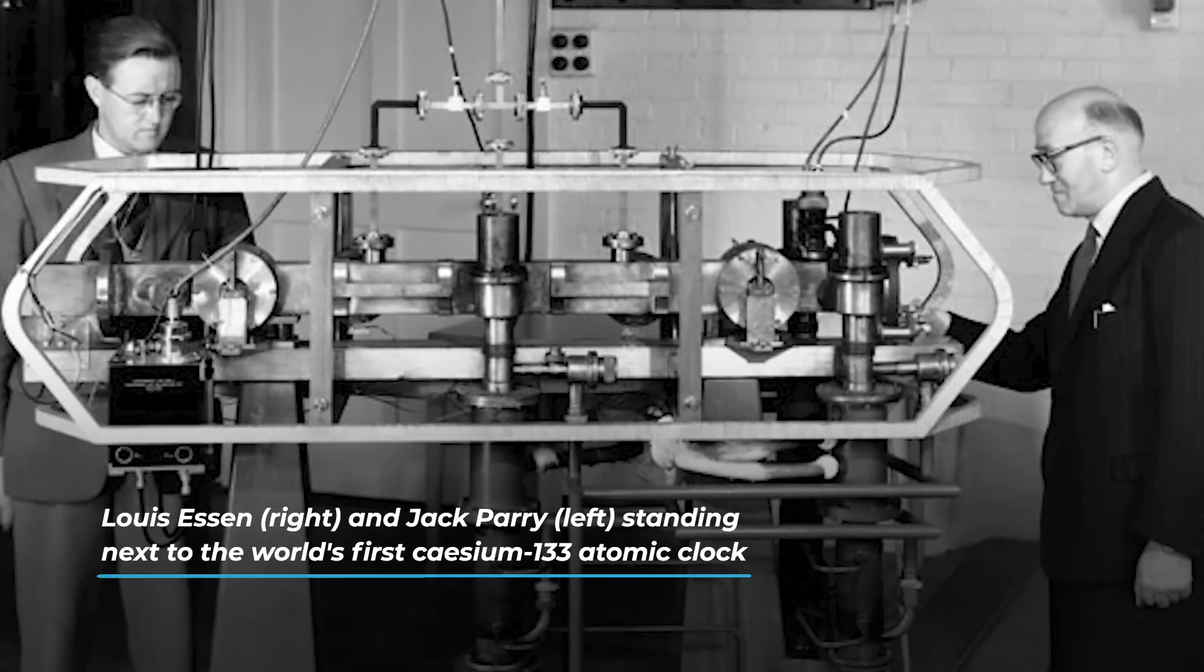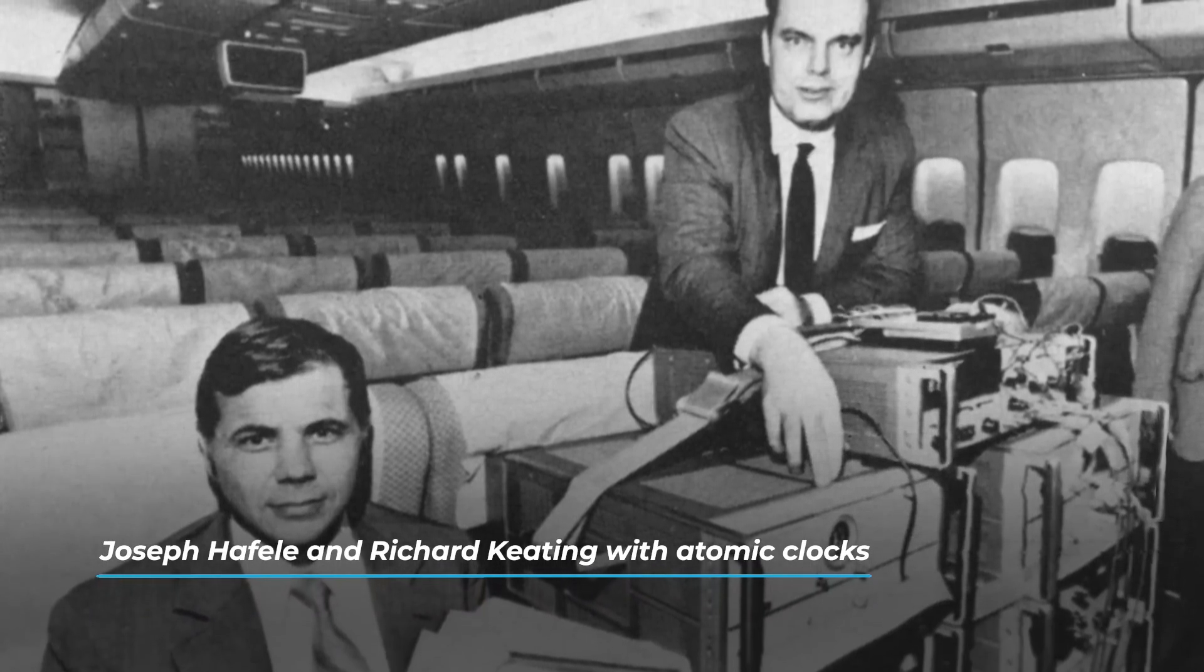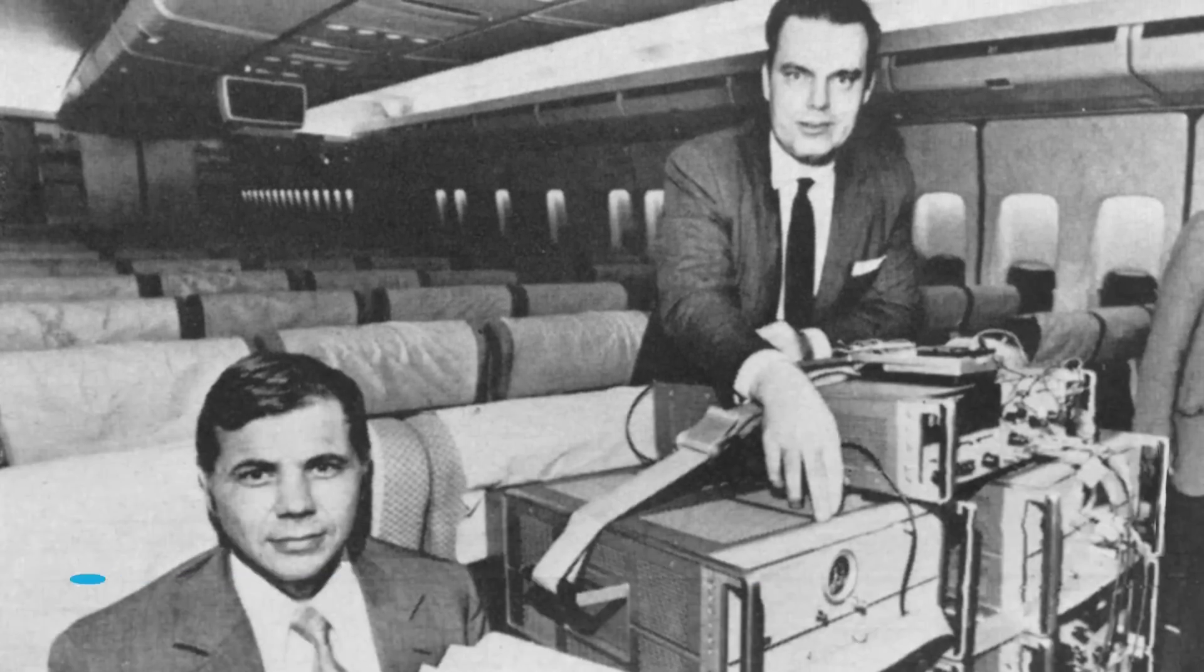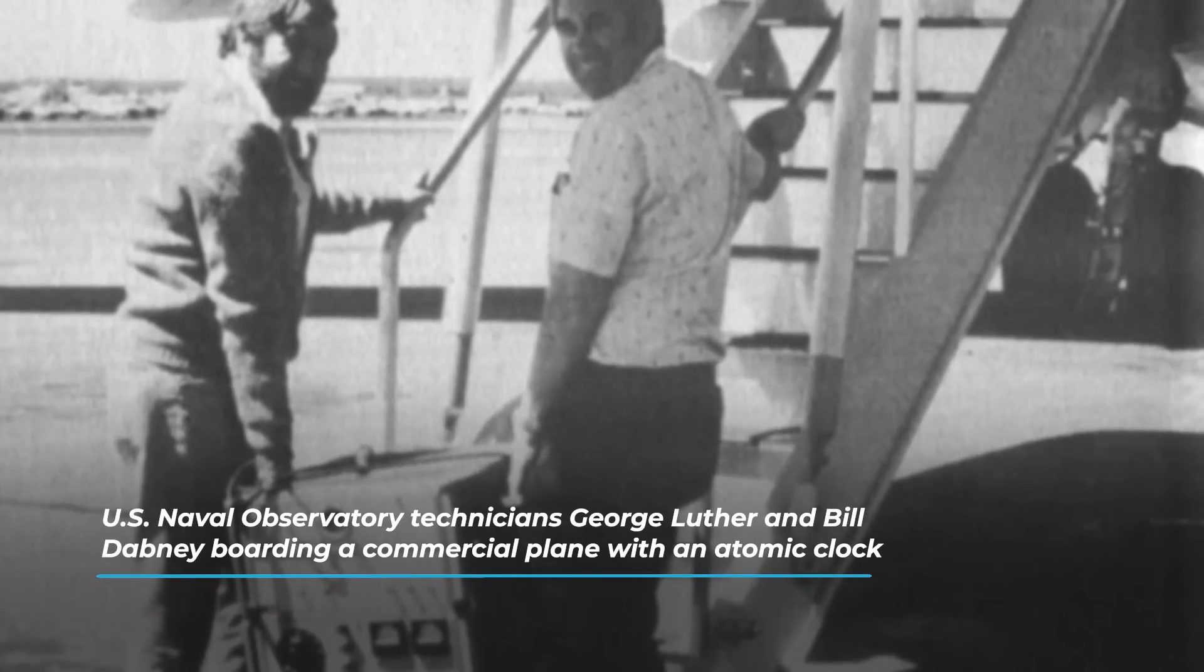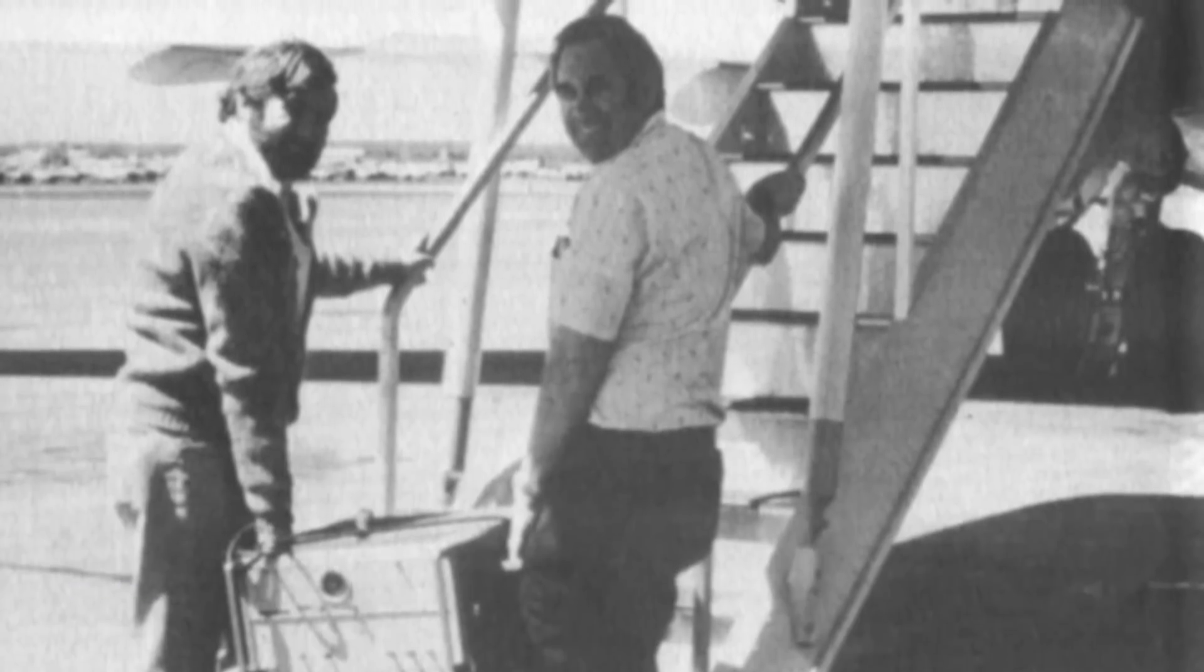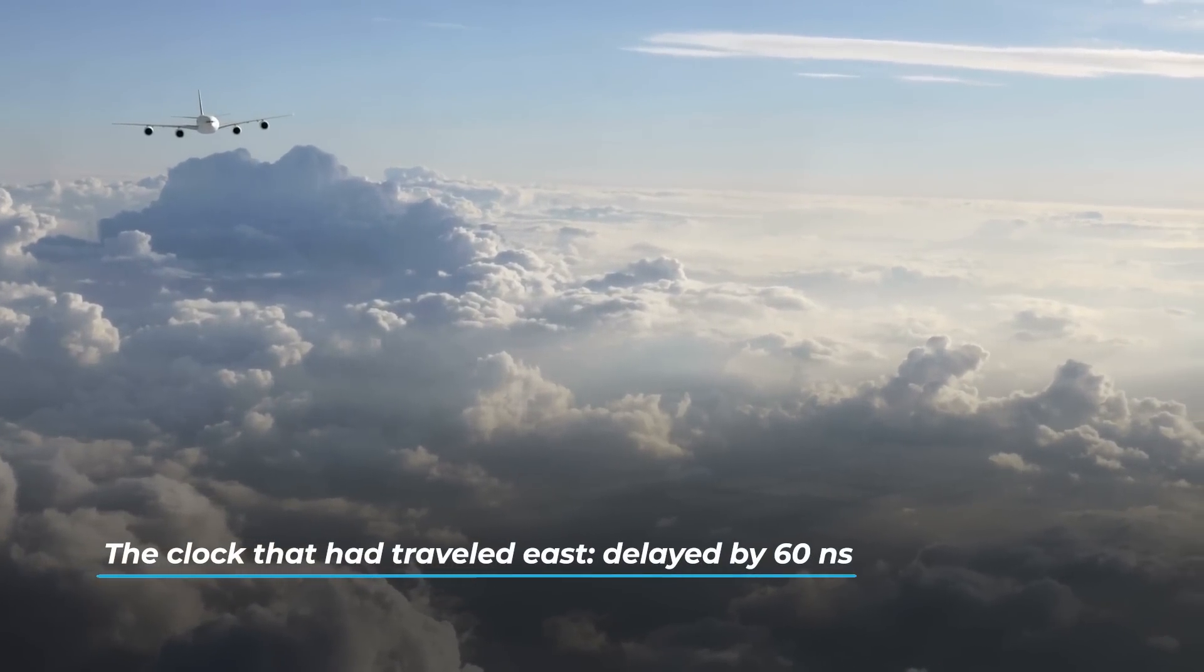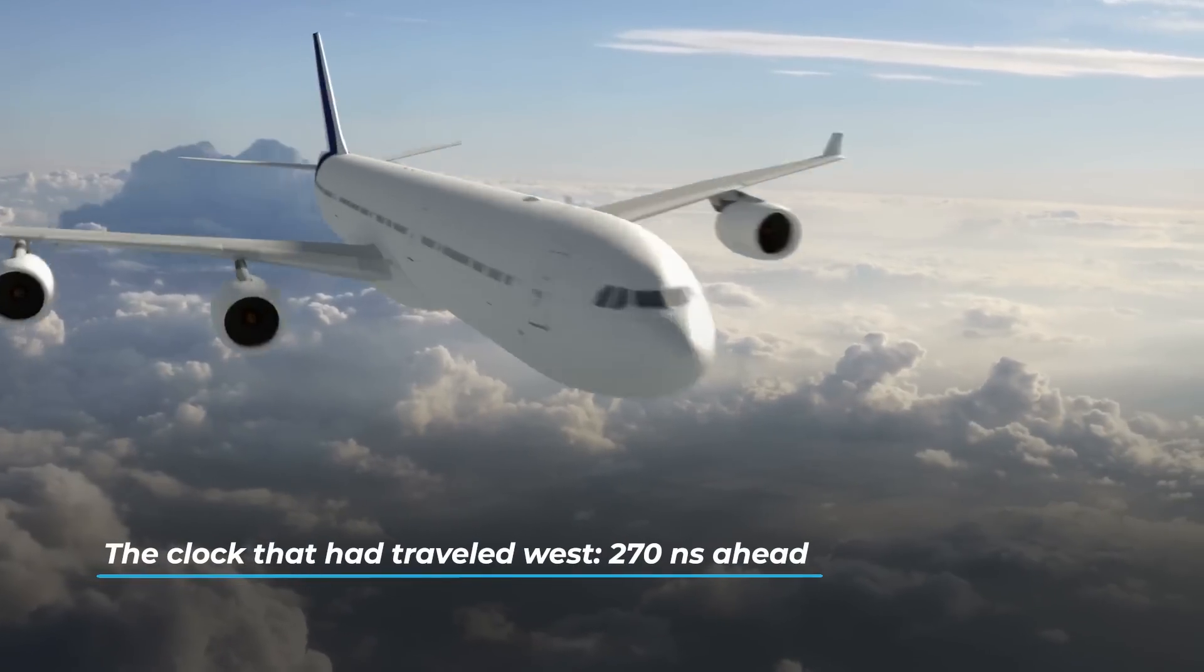In October of 1971, Joseph Hafele and Richard Keating, to measure the relativistic dilation of time, boarded two separate airliners with previously synchronized cesium atomic clocks. The clocks made two turns around the Earth in opposite directions. Upon return, the measured times were compared with each other and with the time marked by a clock left on the ground.